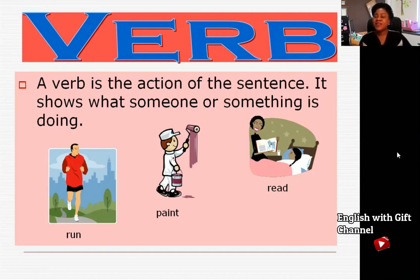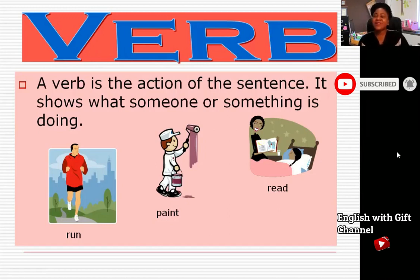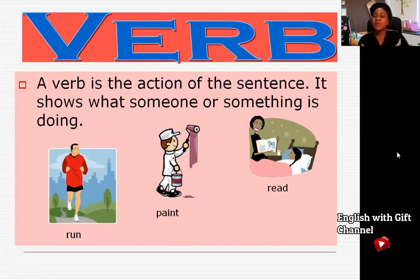A verb is an action being performed at a particular time. This brings us to tenses. In English there is what is called the time of an action, which is tenses. Tenses are related to verbs because the time at which an action is carried out is what is known as tenses — it could be present, past, continuous, or future. In the series of lessons after these, I'm going to be talking about tenses in English.